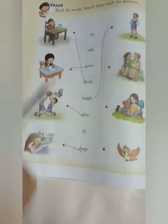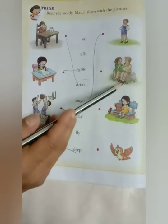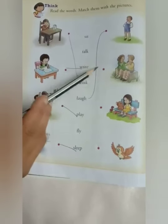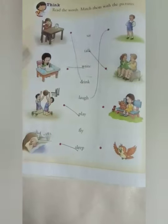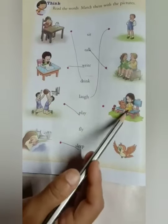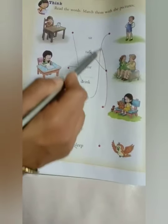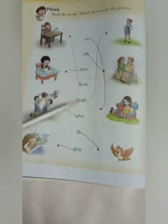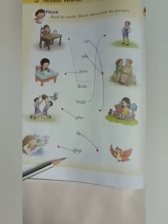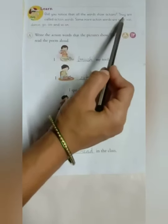This girl is sleeping, so 'sleep.' There are two students sitting on a bench — what are they doing? They are talking to each other: 'talk.' She is sitting with a pet: 'sit.' What is this bird doing? 'Fly.' All of these are known as action words — all these words show action.